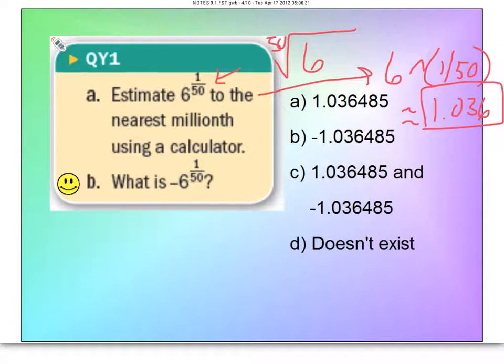Now when you look at B, there's just a slight difference. That negative sign is just sitting out there all on its own, and then it's really just asking you 6 to the 1/50th power. So it's the same value we found, but we're going to make it negative. So the answer here is negative 1.036.